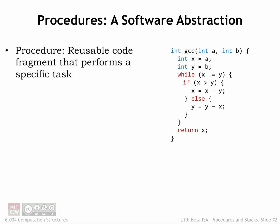One of the most useful abstractions provided by high-level languages is the notion of a procedure or subroutine, which is a sequence of instructions that perform a specific task. A procedure has a single named entry point which can be used to refer to the procedure in other parts of the program. In the example here, this code is defining the GCD procedure, which is declared to return an integer value.